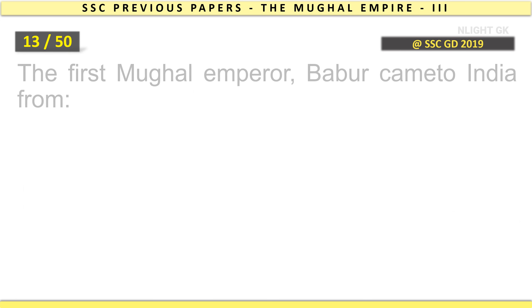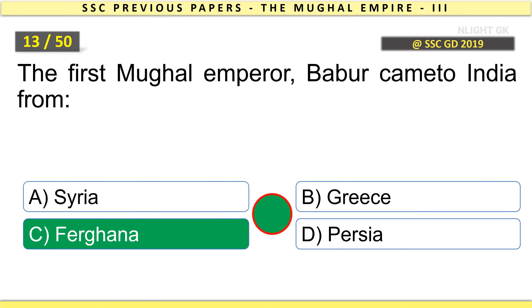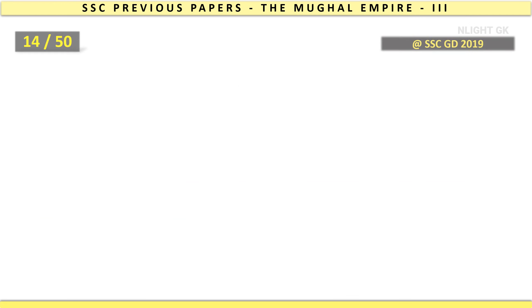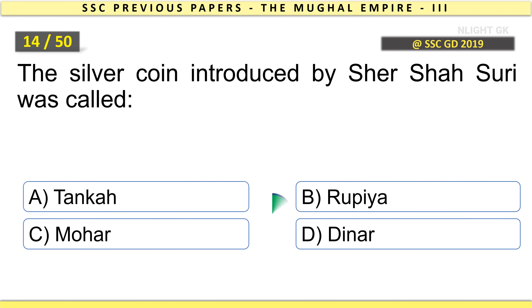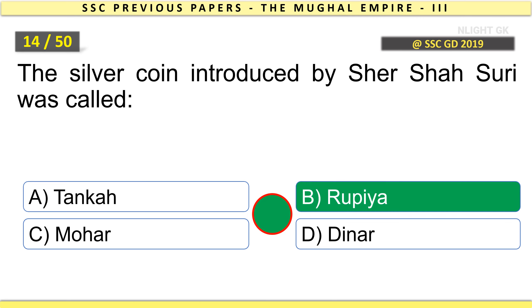The first Mughal Emperor Babur came to India from Ferghana. The silver coin introduced by Sher Shah Suri was called Rupiah.